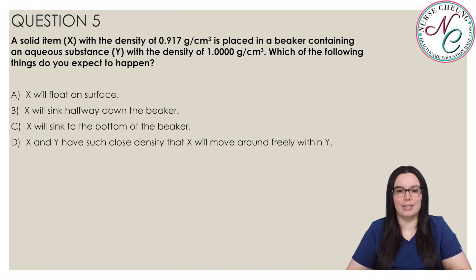A solid item X with a density of 0.917 grams per centimeter cubed is placed in a beaker containing an aqueous substance Y with a density of 1.000 grams per centimeter cubed. Which of the following things do you expect to happen? Is it A X will float on the surface, B X will sink halfway down the beaker, C X will sink to the bottom of the beaker, or is it D X and Y have such close density that X will move around freely within Y? And the correct answer is A X will float on the surface.